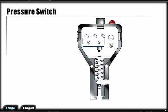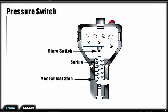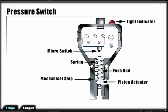There are two types of pressure switches: the bourdon tube switch and the piston switch, shown here. This pressure switch consists of a micro switch, a spring, a mechanical stop, a push rod, and a piston actuator.